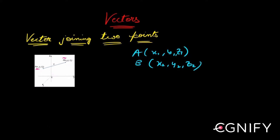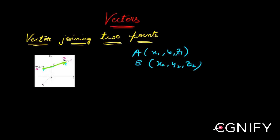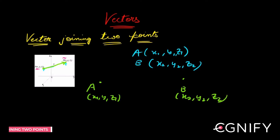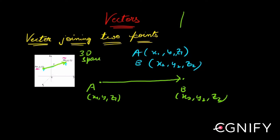Now you want the vector which starts from A and goes to B — that is vector AB bar. This is a three-dimensional space, so just like every other vector in 3D space, we need to find how to represent this vector.